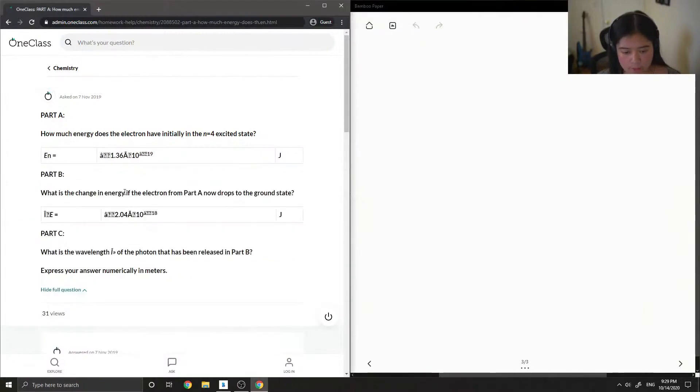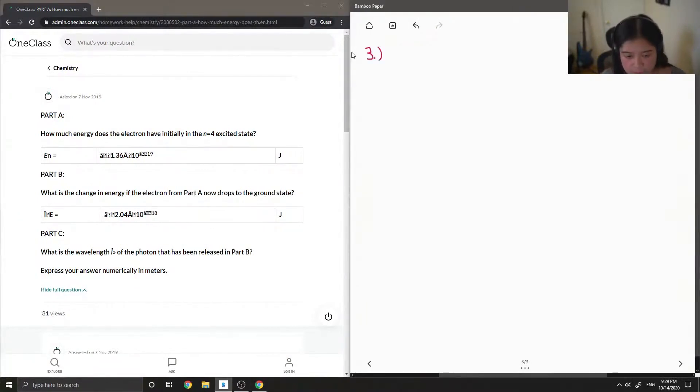On to question number three. So how much energy does the electron have initially in the n equals 4 excited state?